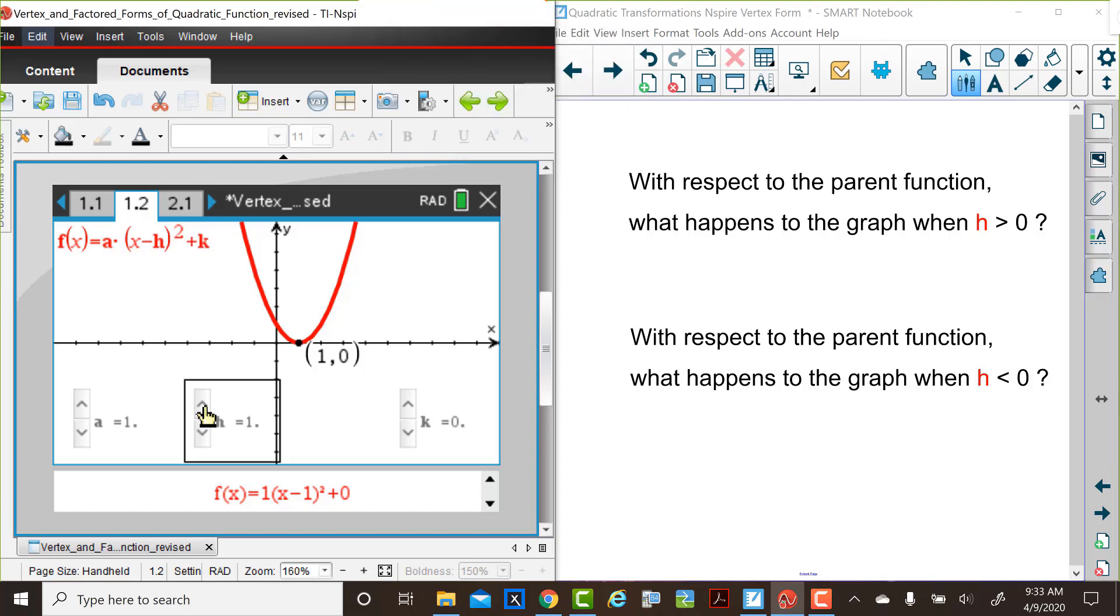When the value of h is positive, we notice that we have a horizontal translation to the right, that number of units. So when h is equal to 2, compared to the parent function, we have a horizontal translation to the right two units. And the vertex is now at (2, 0). The h value is 2, but the y value of the vertex is still 0.